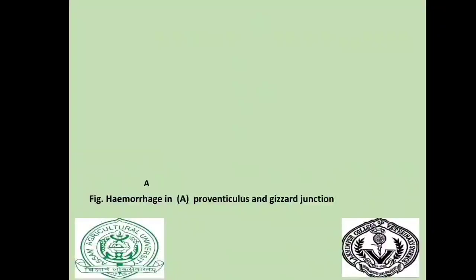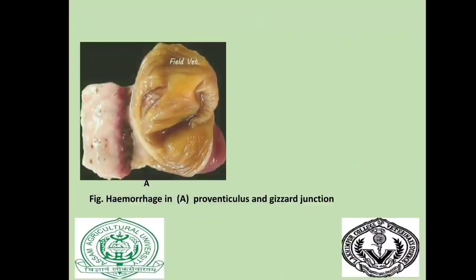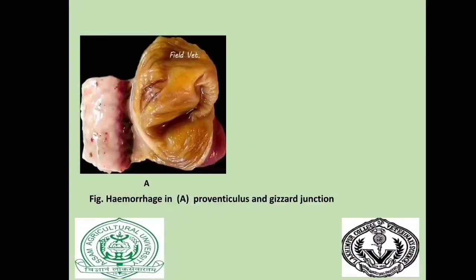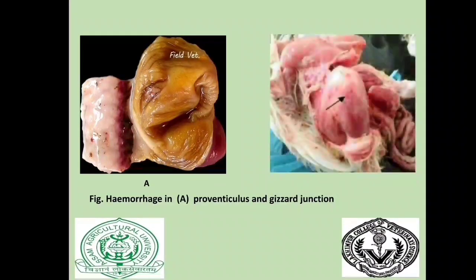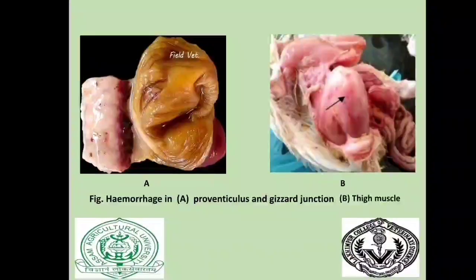Further post-mortem pictures show gelatinous exudate around the bursa with hemorrhages in bursal follicles, hemorrhages at the junction between the proventriculus and gizzard, and hemorrhages on the thigh muscle.